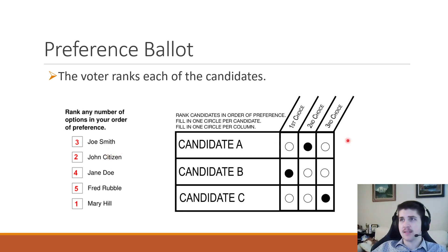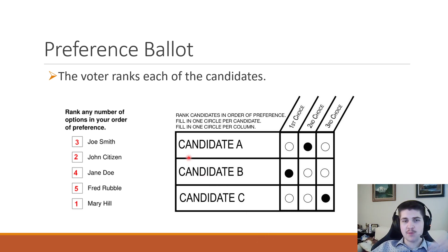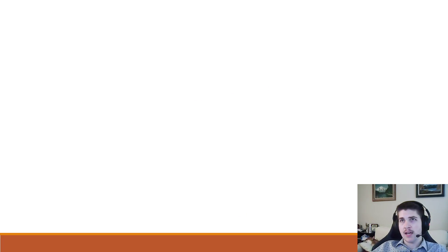It depends on the system, but a lot of times a ballot would list all your choices and you have to rank them first, second, third, and so on. It's called a preference ballot because we're allowed to fill out our entire list of preferences, as opposed to single choice. All the math we're going to be doing is going to use data from preference ballots.